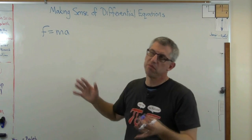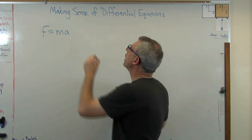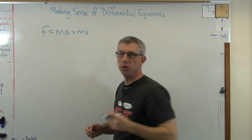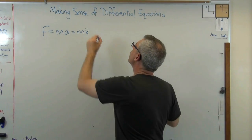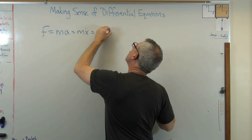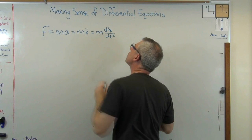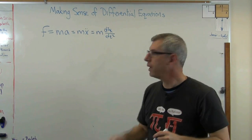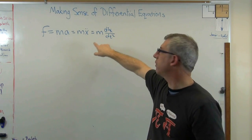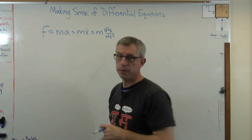Newton wrote this down about 300 years ago. Except he didn't really write it that way — he wrote it using the notation of the second derivative of x with respect to time. Those are equivalent statements. It's actually got a slope of a slope — it's a second derivative, so it's really a curvature. But that's a differential equation.